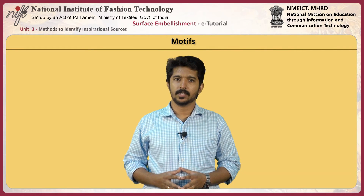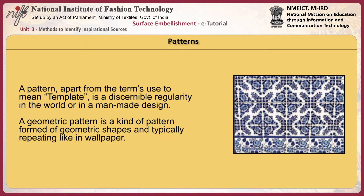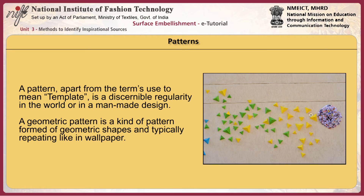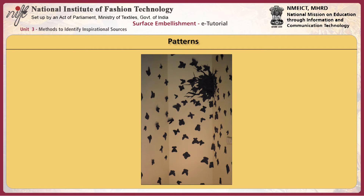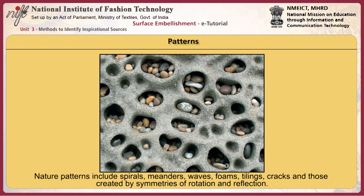Motifs can have emotional effects and be used for propaganda. A pattern, apart from the term used to mean template, is a discernible regularity in the world or in a man-made design. The elements of a pattern repeat in a predictable manner. A geometrical pattern is formed of geometrical shapes and typically repeats like wallpaper. Any of the five senses may directly observe patterns; on the other hand, abstract patterns in science, mathematics or language may be observable only by analysis. Visual patterns are widespread in nature and art. Visual patterns in nature are often chaotic, never exactly repeating, and often involve fractals.